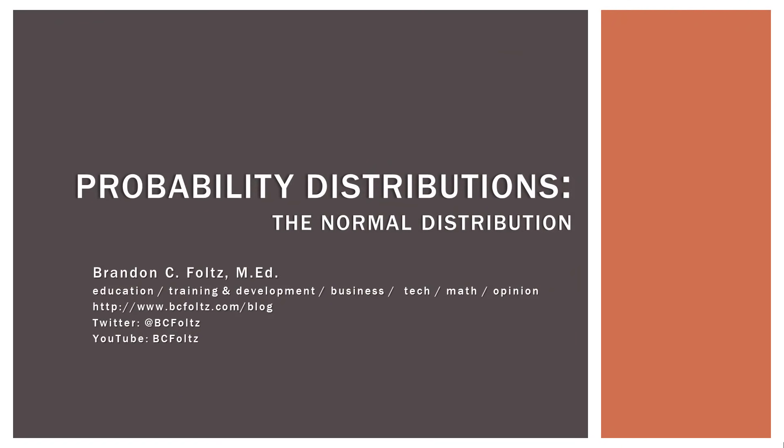This video is the next in a series of several videos on different types of probability distributions. We've talked about the binomial distribution, we talked about the Poisson distribution, and this one is probably the most important because we're going to talk about the normal distribution. If you've had stats or you're currently in a stats class, I'm sure you have heard about the normal distribution and the bell curve — this is the same idea. The normal distribution is by far the most important thing to understand as you get into higher level statistics, because so much is based on understanding it.